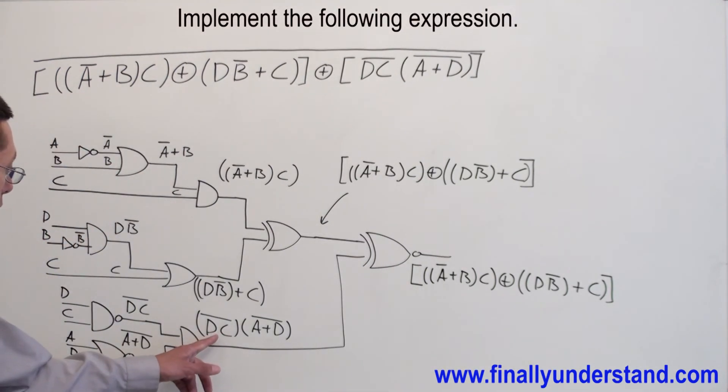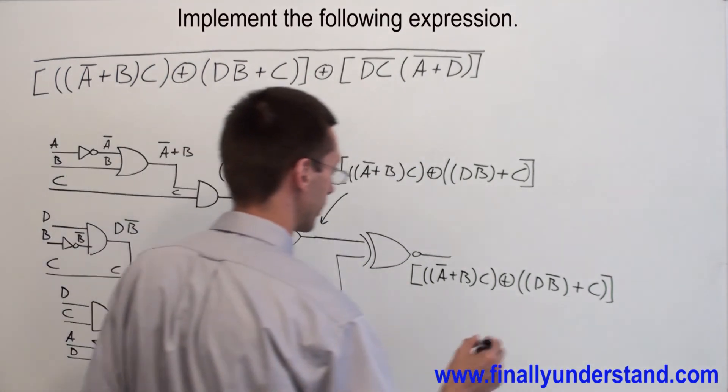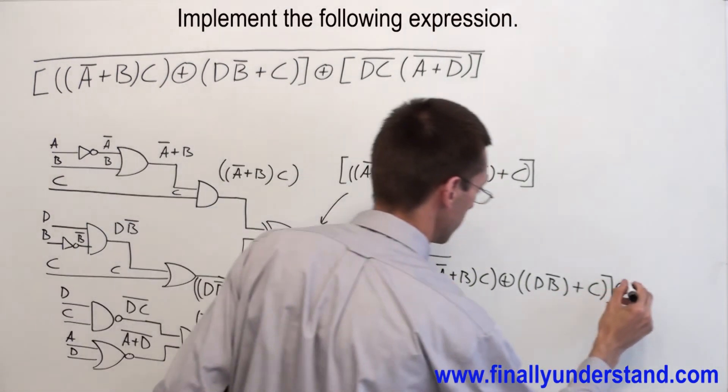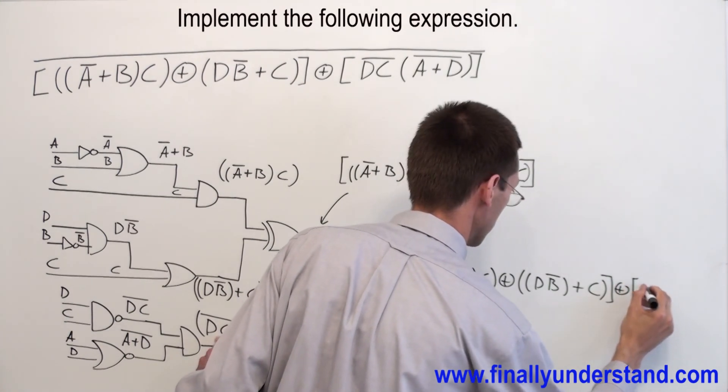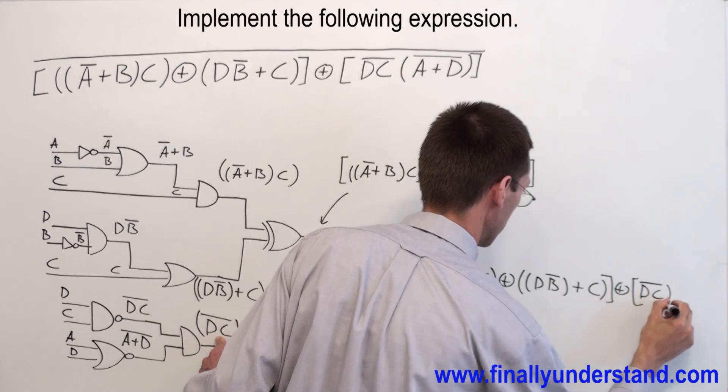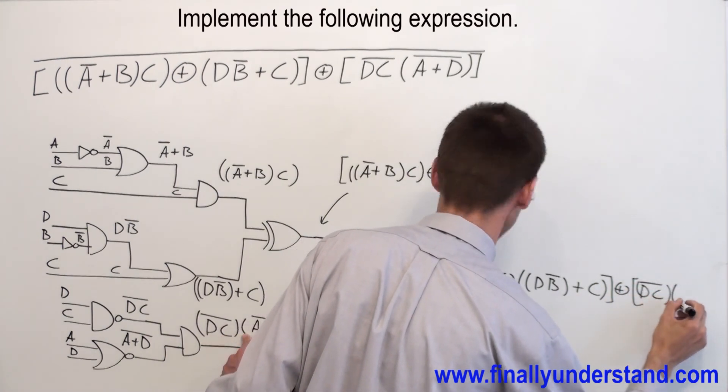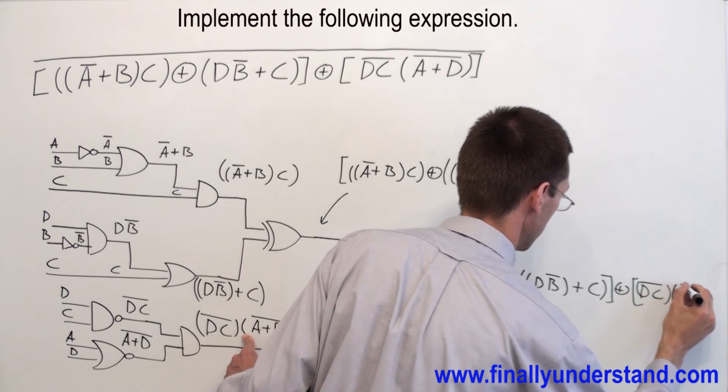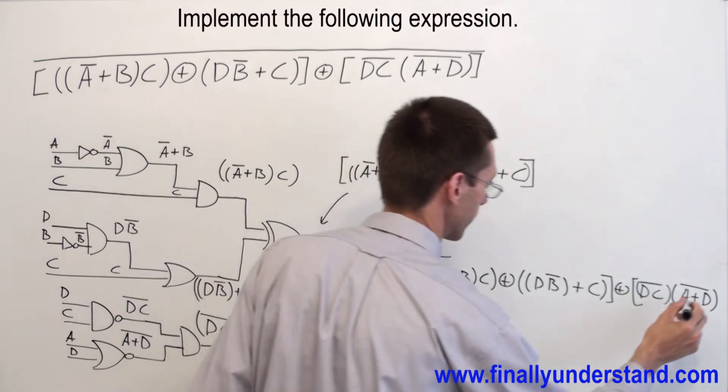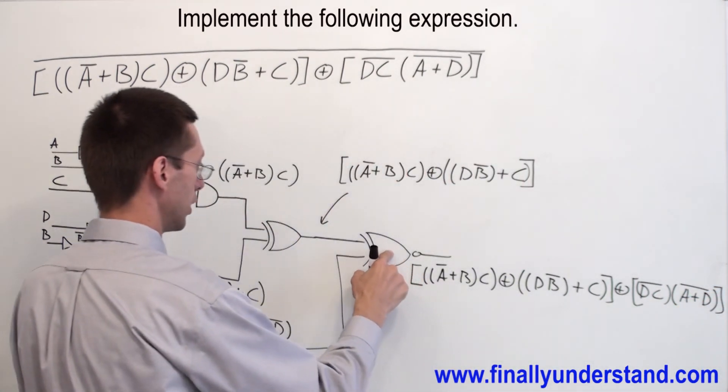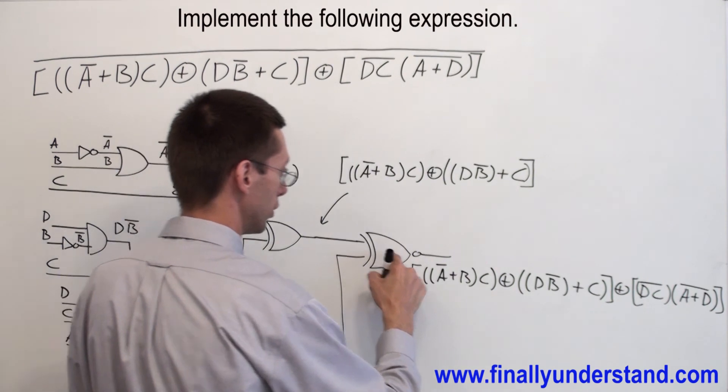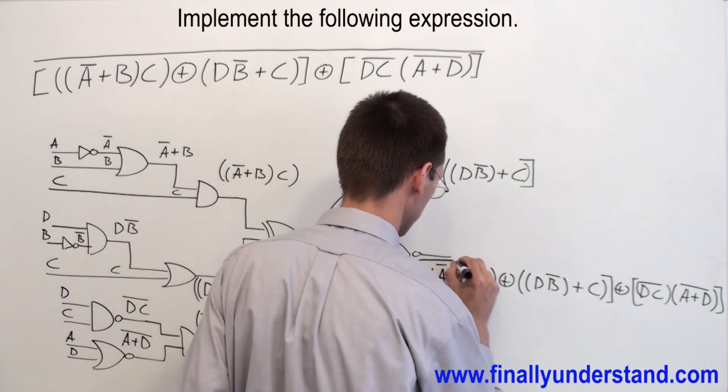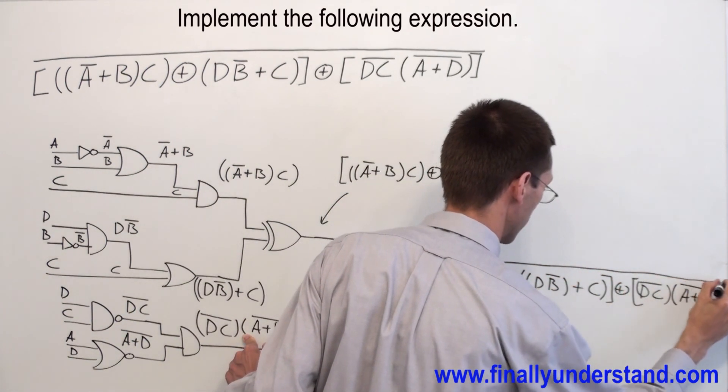And on the second input, we get exclusive NOR over here. I have D, C NAND ANDed with A OR D NOR, right? And we said this is exclusive NOR. So this is my exclusive OR sign, but has to be NOR. That's why I'm going to have the bar over the whole expression.